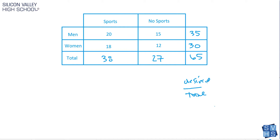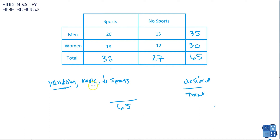For example, the first question might be: if I pulled a random person, what are the odds that it's a male who does not play sports? When looking at the denominator, that's the total pool of people you can choose from. If you choose randomly, that includes men, women, sports, no sports — every person in the whole pile — so that's over 65. Now, how many males don't play sports? There are 15 of them. So the answer is 15 out of 65.